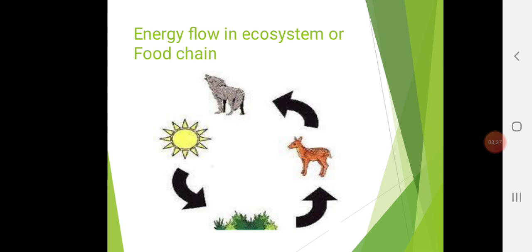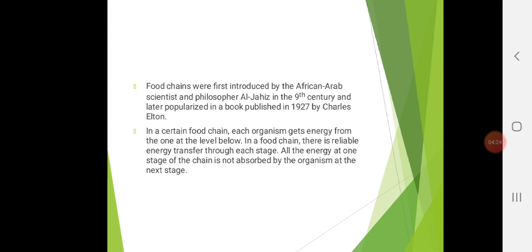Food chain is also defined as a chain of organisms existing in any natural community through which energy is transferred. The main purpose of a food chain is energy transformation. Every living being, irrespective of their size and habitat — from the tiniest algae to giant blue whales — needs food to survive. Each food chain is a vital pathway for energy and nutrients to flow through the ecosystem. Food chains were first introduced by the African-Arab scientist and philosopher Al-Jahiz in the 9th century and later popularized in a book published in 1927 by Charles Elton.